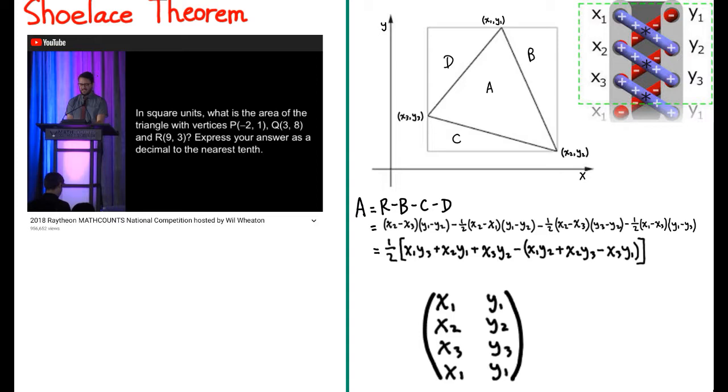So, in this triangle here, with area A, it has vertices of x1, y1, x2, y2, and x3, y3. The area of this triangle over here is B, the area of this triangle over here is C, the area of this triangle over here is D, and the area of the entire rectangle is R. So, obviously, we can figure out that A is R, the total, minus all the other triangles.